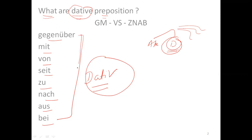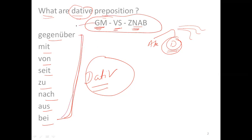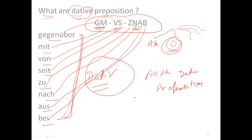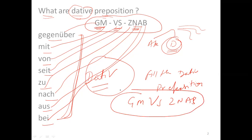There is an abbreviation to learn all the dative prepositions, and this abbreviation is 'GM vs Janab.' If you remember just this abbreviation, you will be able to recall all the dative prepositions: G for gegenüber, M for mit, V for von, S for seit, Z for zu, N for nach, A for aus, and B for bei.